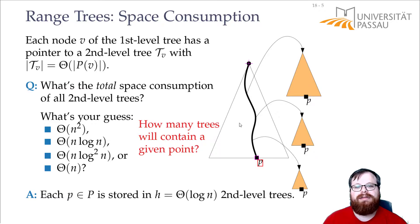As soon as I get away from this path, the second level trees will not contain p anymore. And it's a balanced binary search tree, so the height of it is order of log n or theta of log n. So there are theta of log n second level trees that contain p. Now this is the case for every point. Every point is contained in exactly theta of log n second level trees. So if we sum up the number of points contained in all these trees together, this is at most order of n log n. So we have theta of n log n space here.